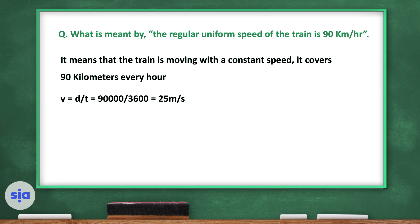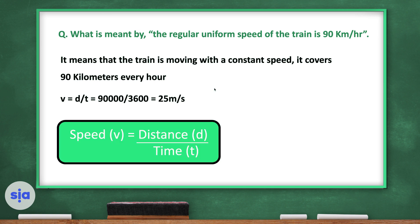Speed equals distance divided by time: 90,000 meters divided by 3,600 seconds (one hour converted to seconds) equals 25 meters per second. We can use this formula for regular uniform speed only — when the object covers equal distances in equal periods of time.